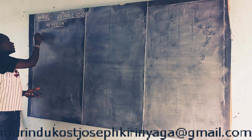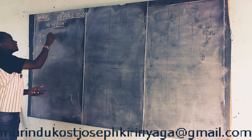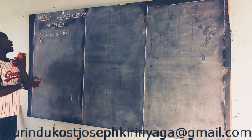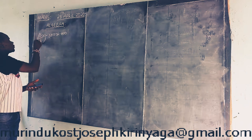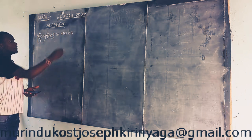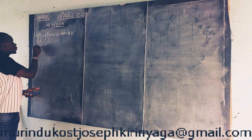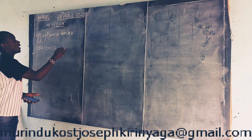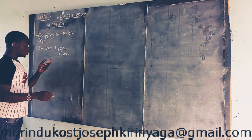We have said that 5 over 3x minus 30 is equal to 400 shillings. That is an answer, but in our choices we do not have that answer. So we find the LCM. The LCM will be 3. We multiply each term by 3, and we are going to get 5x minus 90 equals 1200 shillings. This is our correct answer.